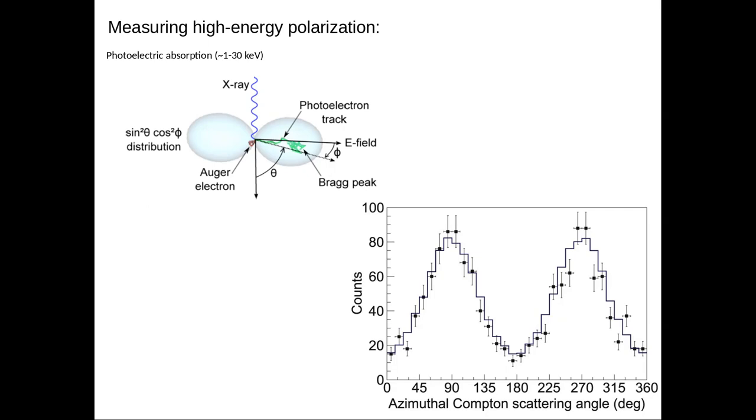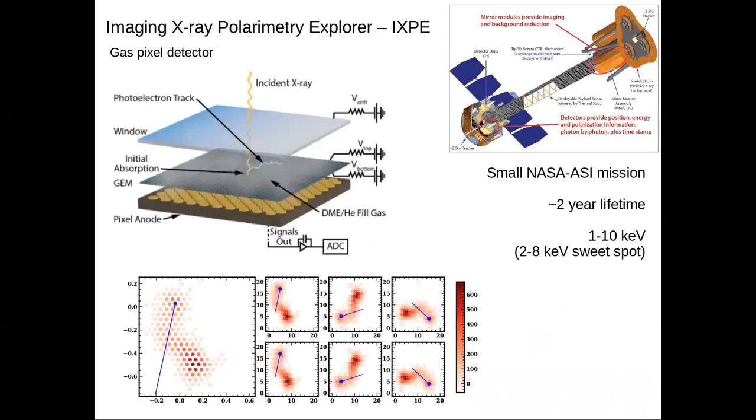This is what IXPE looks like in all its glory. It is a small NASA mission that means we have a two-year nominal lifetime, which ends in December of this year, but we've already been extended for 20 months until the NASA senior review. Given the uniqueness of the mission and its success, it's not unlikely that the mission will continue for many years to come. It has three identical detectors, which are oriented slightly differently with respect to each other, and that helps us take out any spurious polarization signal. They're operating in the 1 to 10 keV range. 2 to 8 is really our sensitivity.